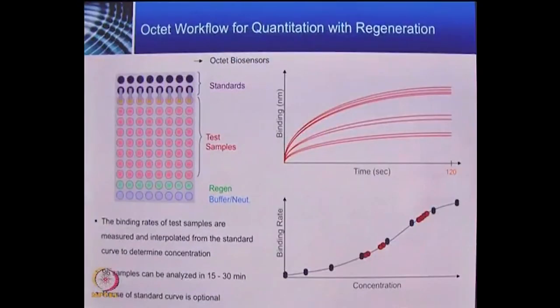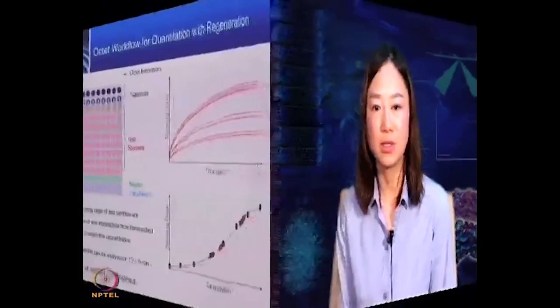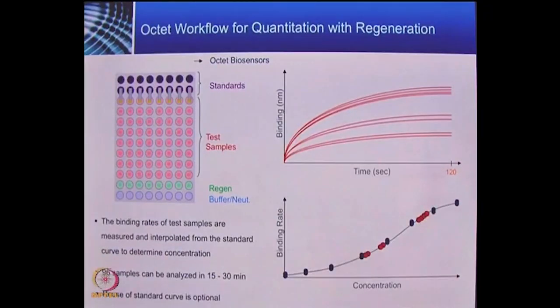One advantage of using BLI technology for concentration analysis is the ability to analyze multiple samples simultaneously. It takes only about 15 to 30 minutes to finish analyzing 96 samples. Depending on the assay, biosensors can be regenerated, meaning you only need 8 or 16 biosensors to analyze a full 96-well or 384-well plate. This dramatically facilitates the application of BLI technology in both the pharmaceutical industry and academic research.